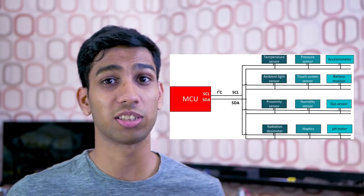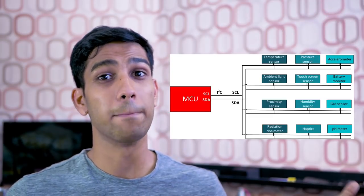I2C is incredibly powerful and using just two wires we can connect up to 1008 devices within one I2C loop. I2C is a communication protocol that's used to transmit information between electronics. It was developed by Philips in 1982 to assist with the communication between the CPU and the different peripherals within its audio and visual appliances.